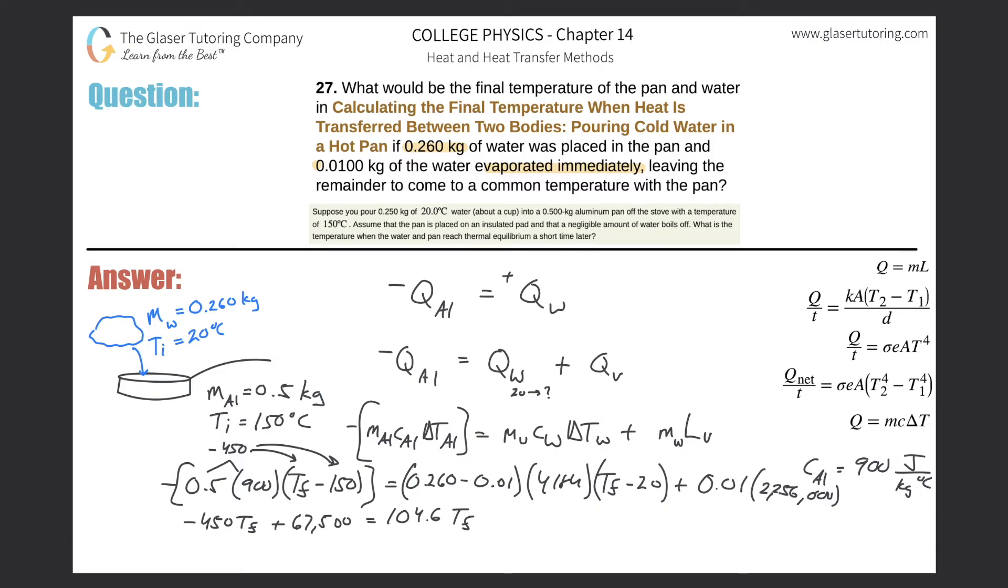Let's move some terms. Let's add the 450 Tf. So we got 67,500 minus that value, which is 47,032, will equal now 450 plus 104.6, so that's going to be 554.6 Tf. Now just divide out the 554.6 from both sides, and we get about 84.8.